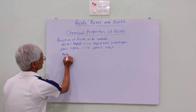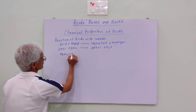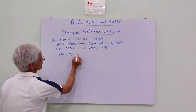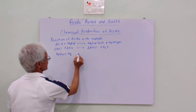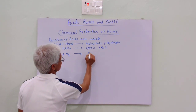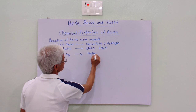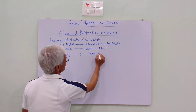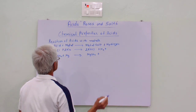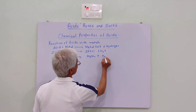Another example: H₂SO₄ plus Na gives NaSO₄ plus H₂.